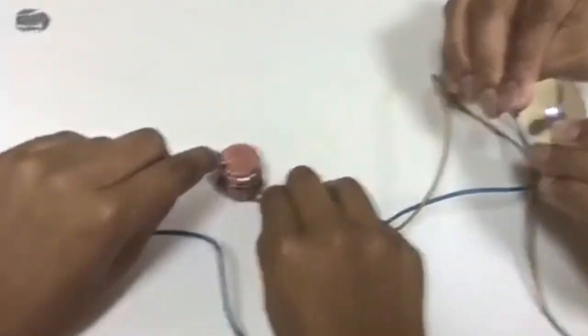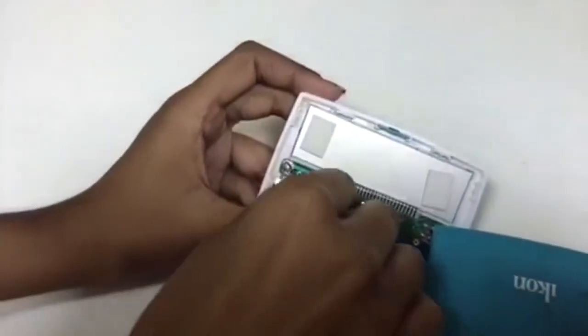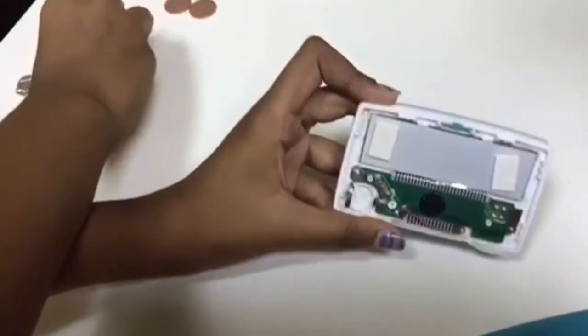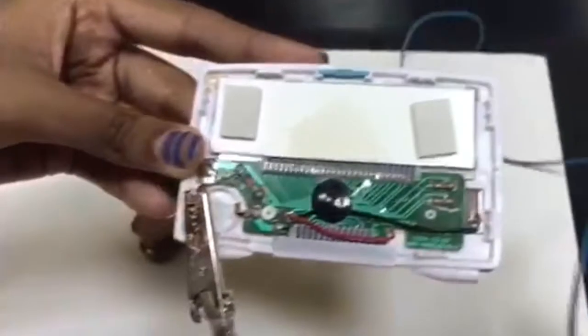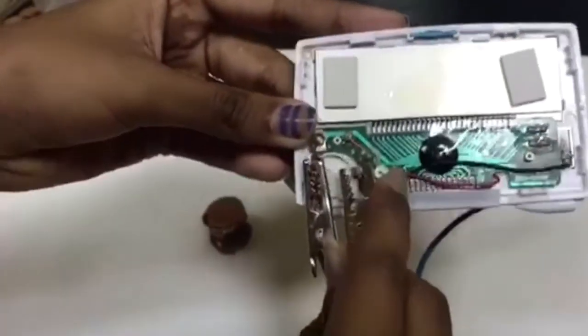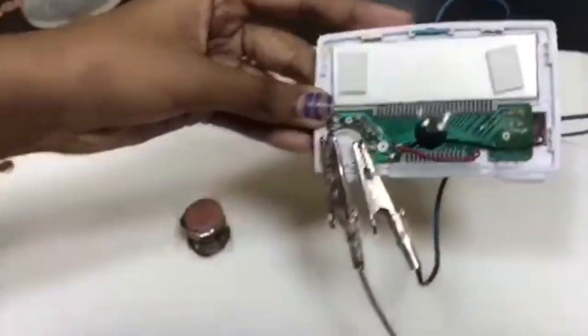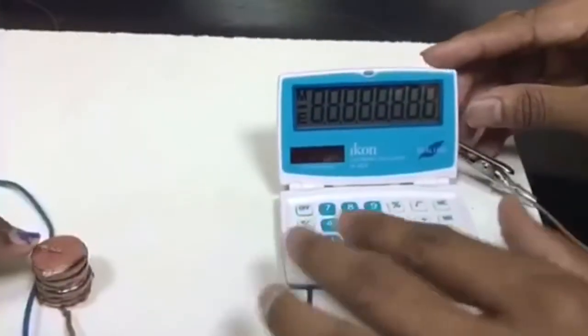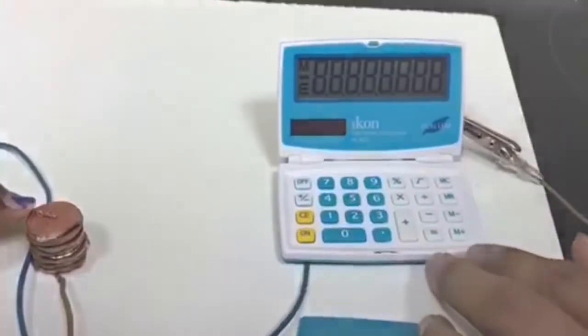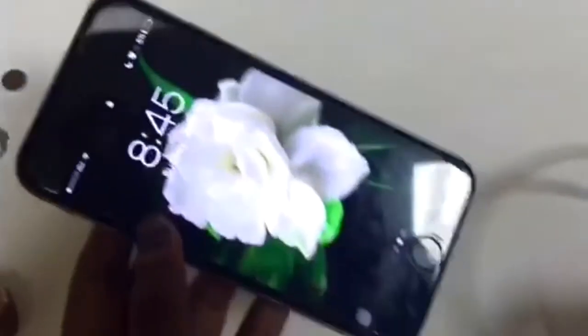If you want, you can also power up a pocket calculator. As you can see, I'm just removing the battery. I'm connecting it with the two wires instead. Now you can see that the calculator is turning on. If you have enough volts, you can even charge your phone.